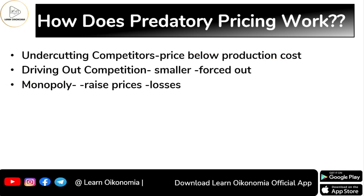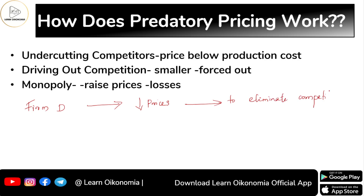How does predatory pricing work? Firm D reduces the prices of its commodity to eliminate competition. Once competition is eliminated, the price is increased. The intention of firm D is to eliminate competition and establish a monopoly position.